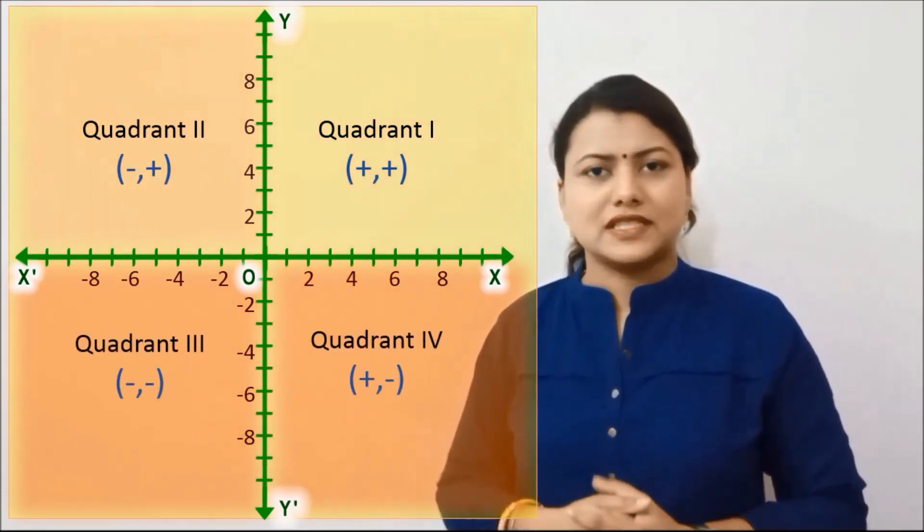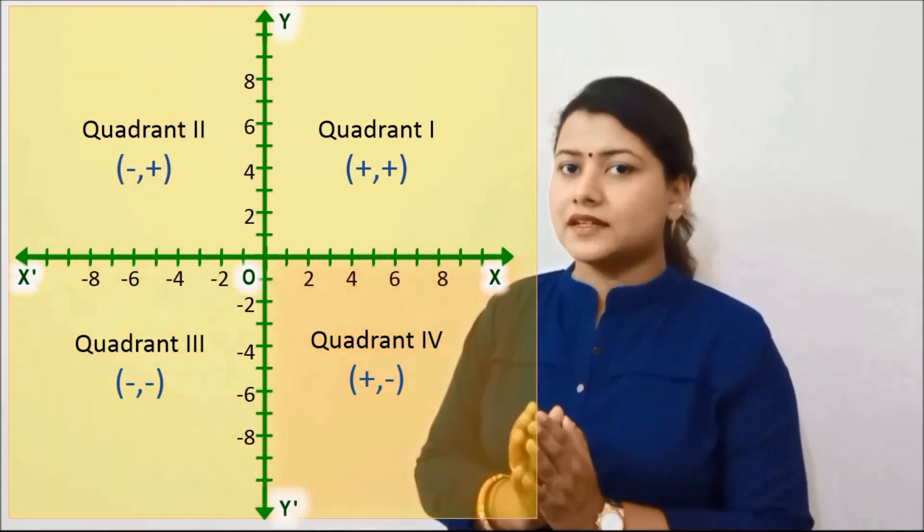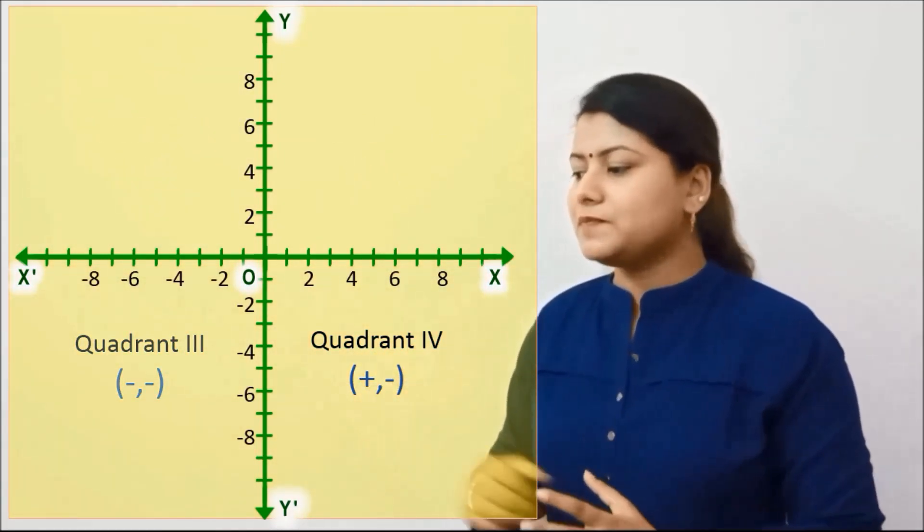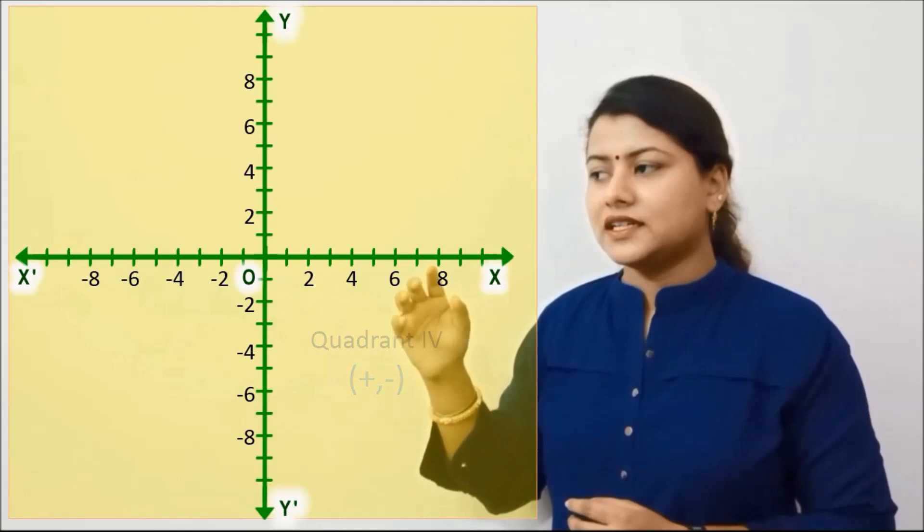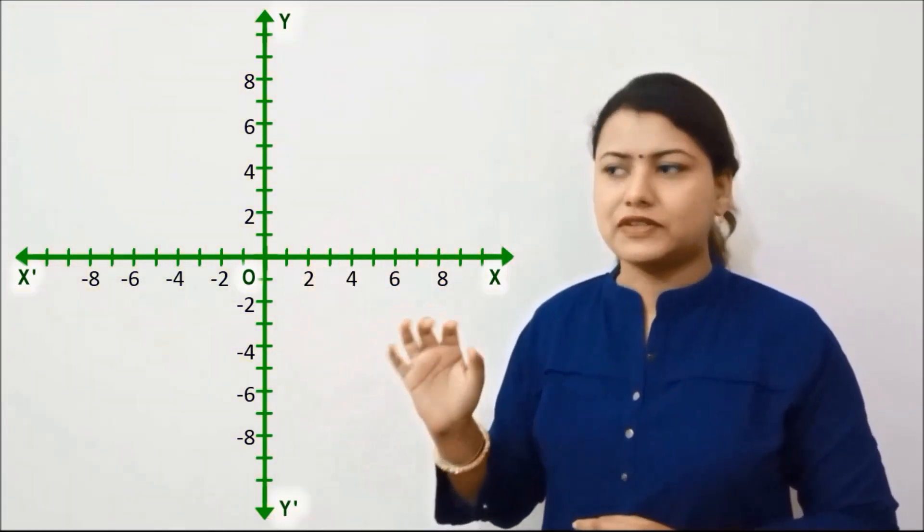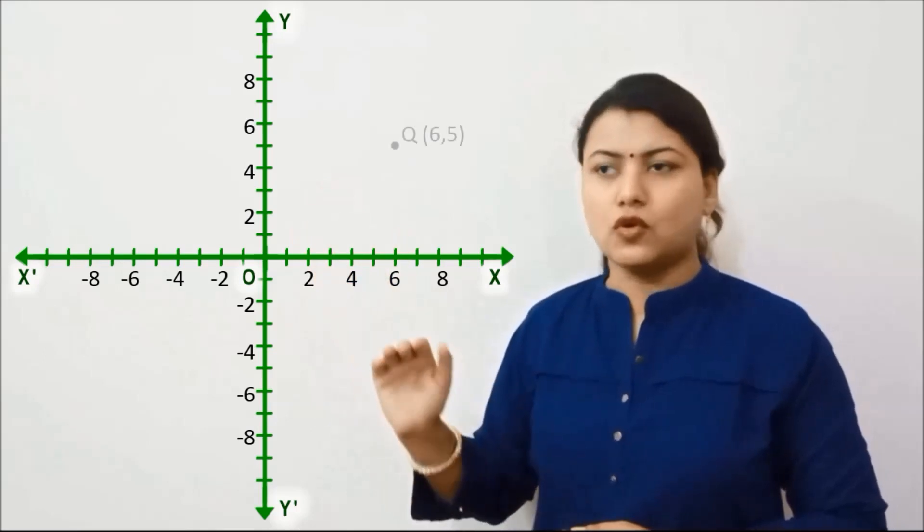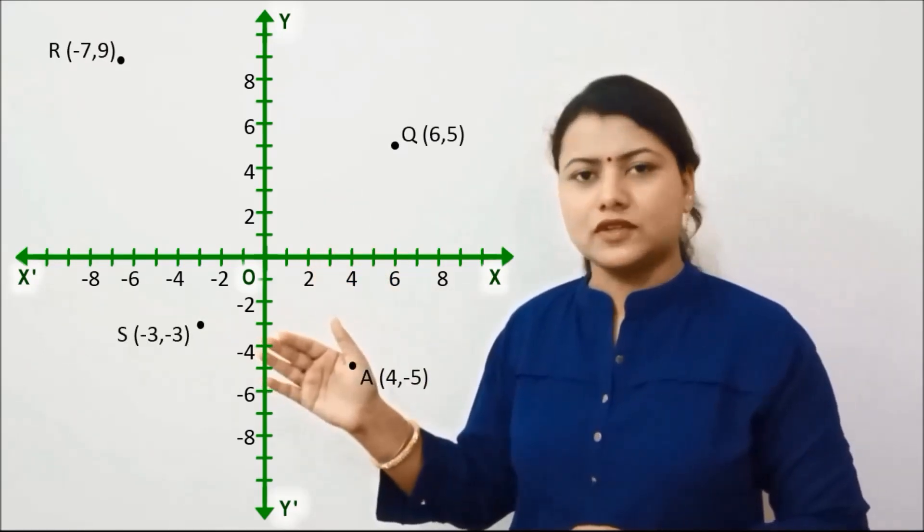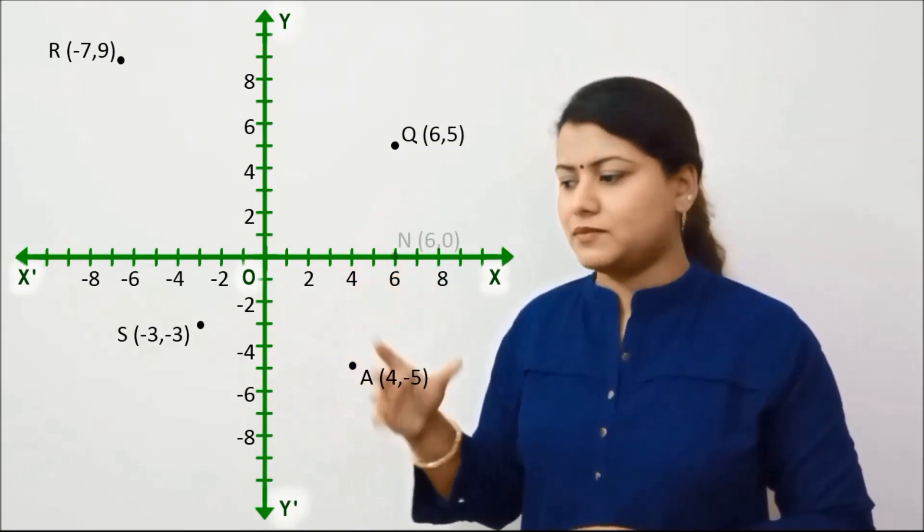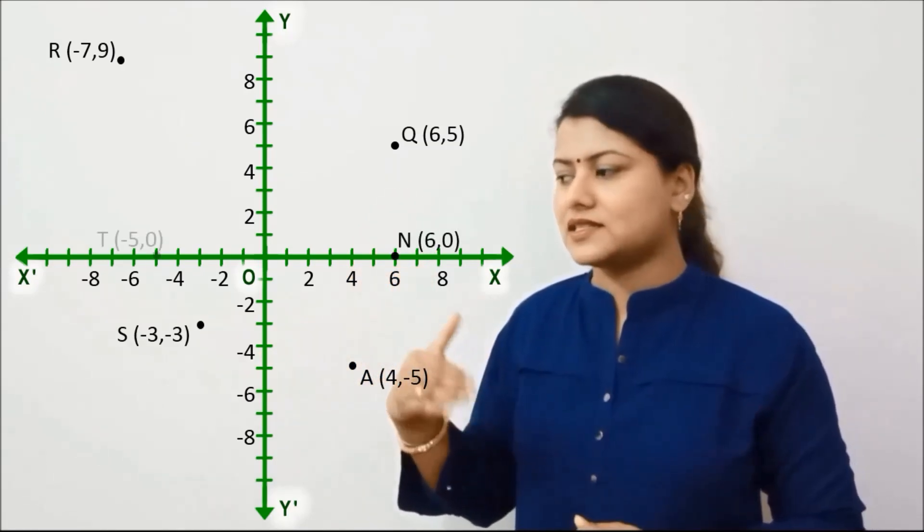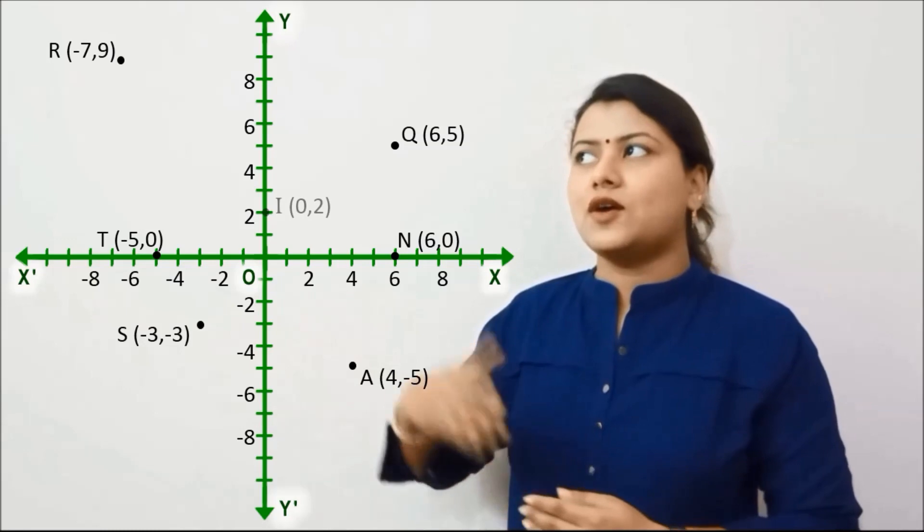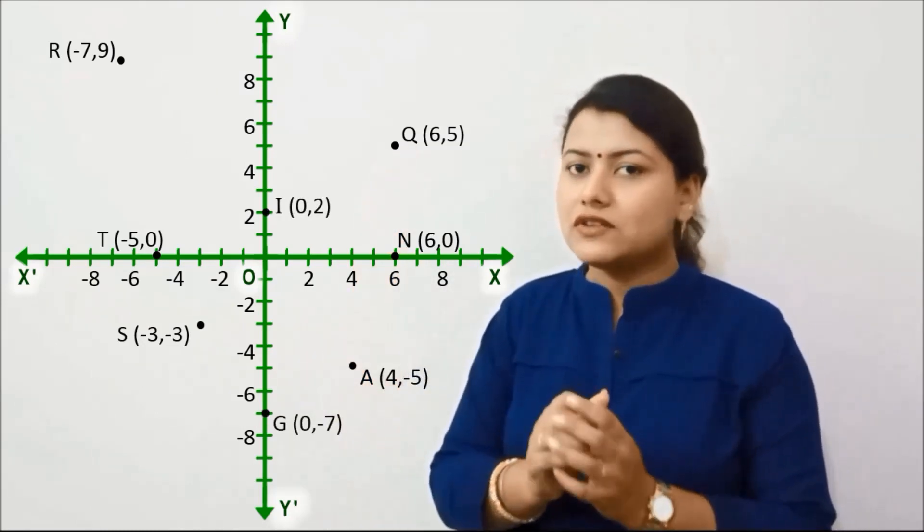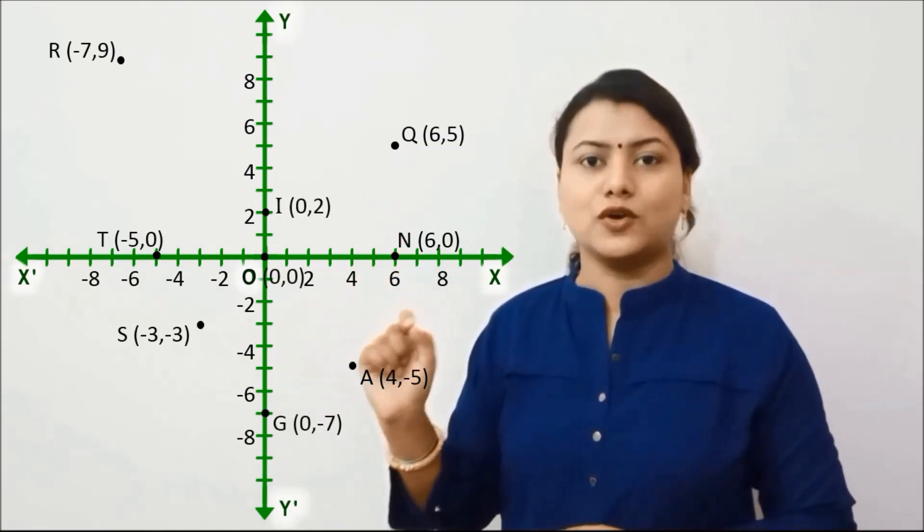And if you will see that if any point will lie on this plane, it will lie on any of the four quadrants, or the point will lie on any of the axes, maybe the positive x-axis, the negative x-axis, or the y-axis, or even the point can lie on the origin.